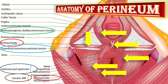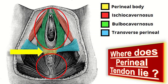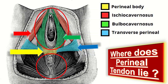It is very important to know where the perineal tendon lies. The perineal tendon lies between the anal canal and the lower end of the vagina. In this diagram, the yellow structure is the perineal body, the red structure indicates the ischiocavernous muscle, the green structure shows the bulbospongiosus muscle, and the blue structure indicates the transverse perineal muscles.